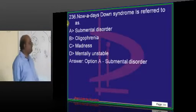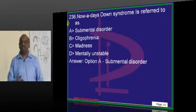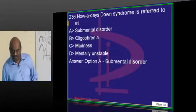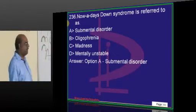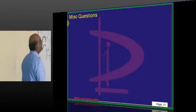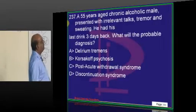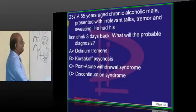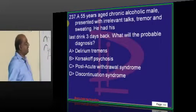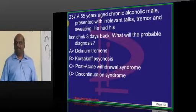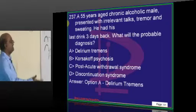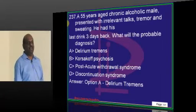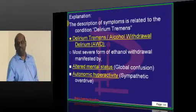Down syndrome is nowadays called a sub-mental disorder because mental retardation is very common in Down syndrome. A 55-year-old alcoholic with irrelevant talk, tremor, and sweating is a classical case of delirium tremens.